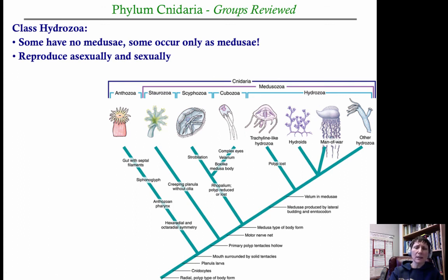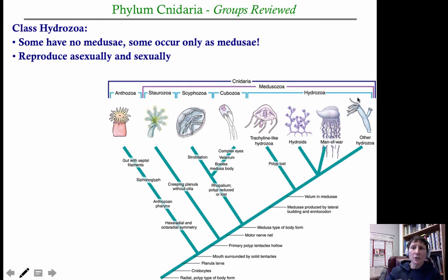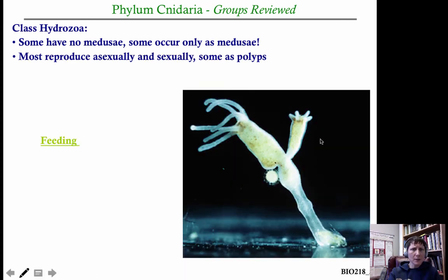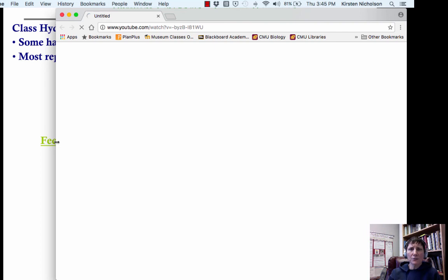The Hydrozoa, as mentioned, is kind of a garbage can group. We don't fully understand the relationships among the different species classified here. There are lots of different life forms — some have no medusas, some do have medusas, some are only medusas. They can reproduce sexually or asexually, and they also include colonial forms like the Portuguese man-of-war.